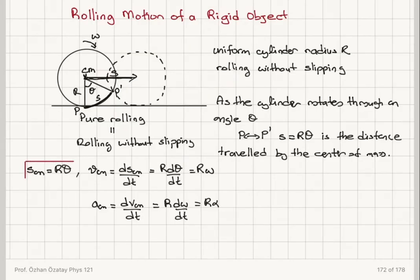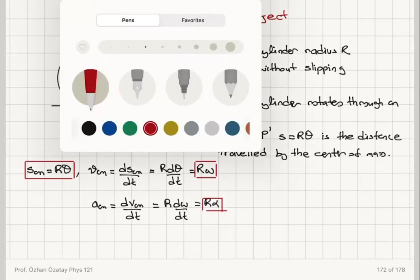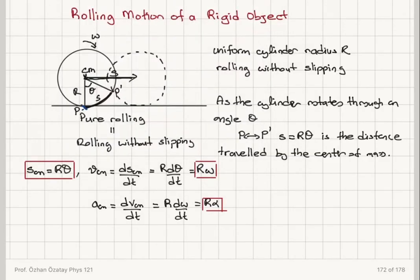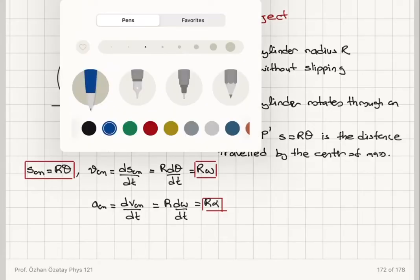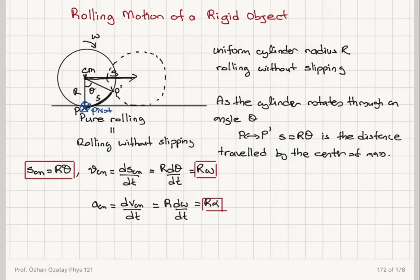So in pure rolling, when the cylinder rolls through an angle theta such that we have an arc length R·theta traced by the bottom point, the velocity of the center of mass equals R·ω and the acceleration of the center of mass equals R·α. Now we can think of this rolling motion as a rotation around a pivot point at the contact point P.